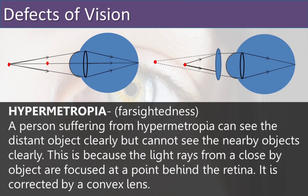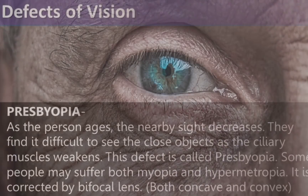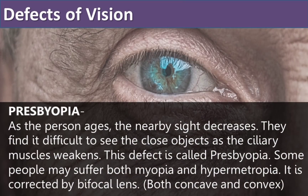The next defect is hypermetropia, that is farsightedness. It is just the opposite of myopia. People suffering from this condition can see distant objects clearly but cannot see nearby objects clearly. It can be corrected by a convex lens. See the definitions of hypermetropia and myopia clearly.